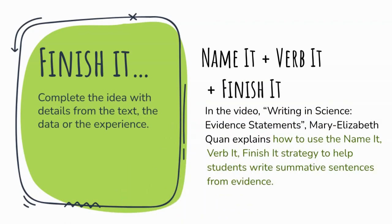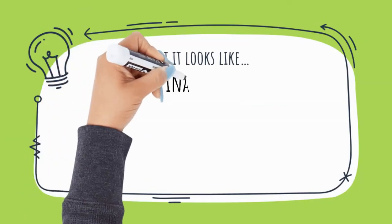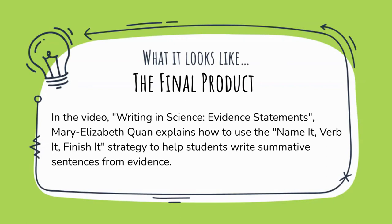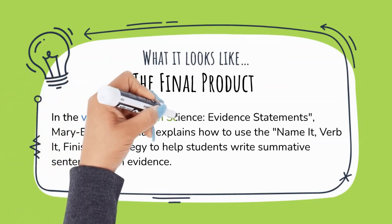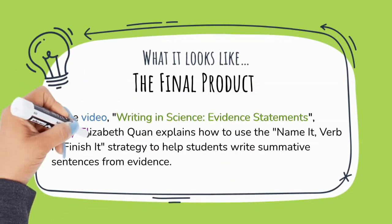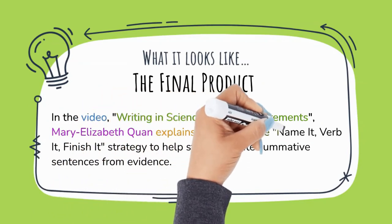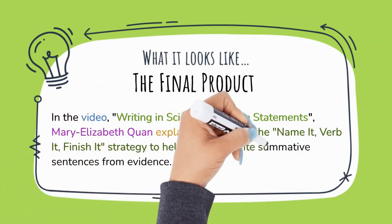So to have students practice different parts of the strategy, you can provide the name it and verb it portions and then ask the students to finish it. Or you can call attention to the use of a variety of verbs that could be used. You could give the students the name it and finish it portions and ask them to use an appropriate verb to finish the sentence.